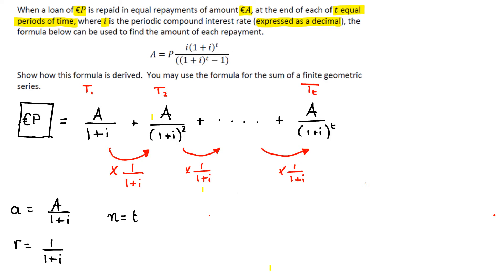You then have to work with your SN formula. So S, and we're going to do T in this case, is equal to A, so our first term, 1 plus I,